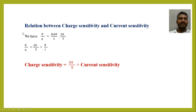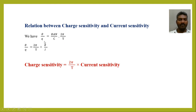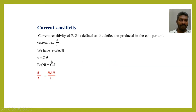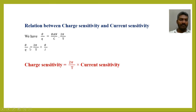Now let us see the relation between charge sensitivity and current sensitivity. From the theory of the ballistic galvanometer, θ/Q = BAN/C × 2π/T. We can write θ/Q = 2π/T × θ/I, where θ/I is the current sensitivity. Therefore, charge sensitivity = (2π/T) × current sensitivity.